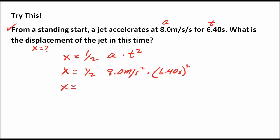That gives us 163.84 meters. We can cancel units: seconds squared in the time term cancels with seconds squared in the acceleration unit, leaving meters. So the answer is 163.84 meters. By the way, if you've studied significant digits, we're not worrying about that right now — we'll cover it in a later lesson.